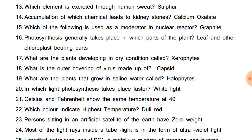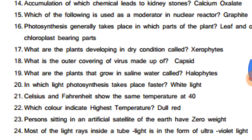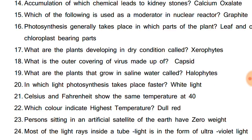What are the plants that grow in saline water called? They are known as halophytes, for example, date palm, sea lavender, etc. In which light does photosynthesis take place faster? White light.